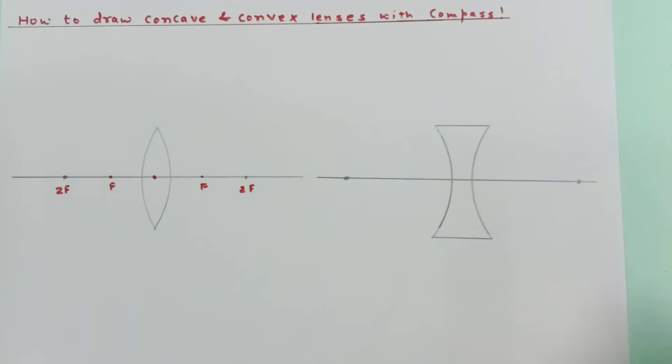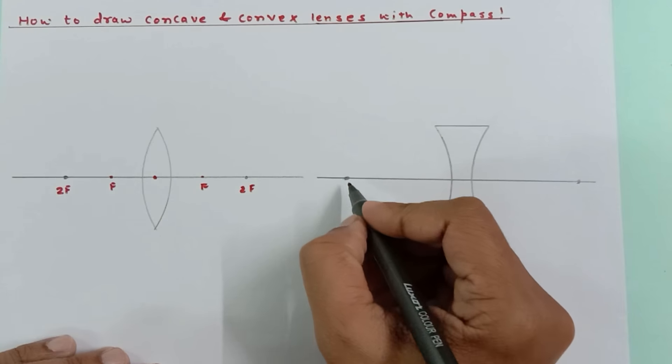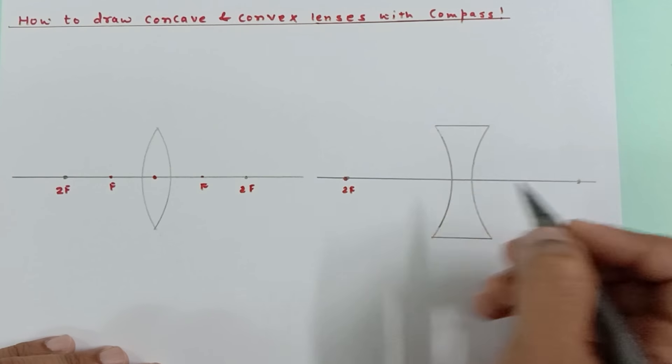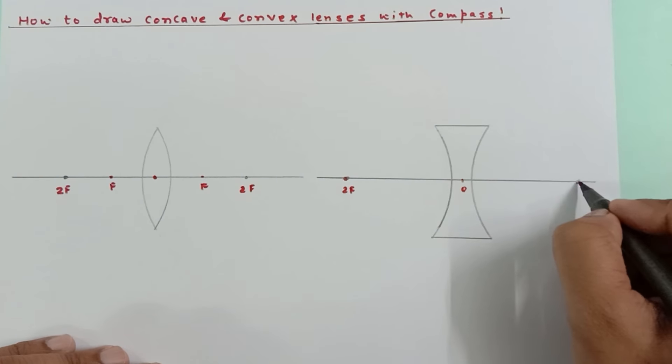And you have marked where are F and 2F. This point would be 2F, again this is O - this is the optical center - this is again 2F.